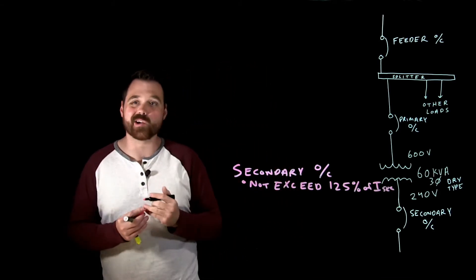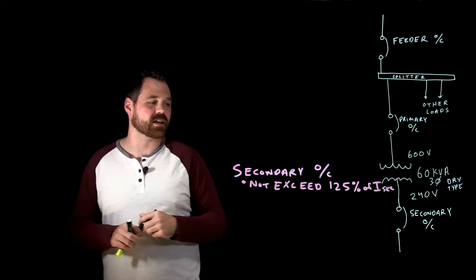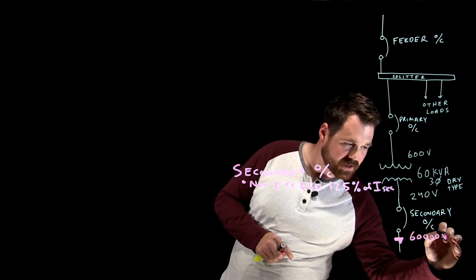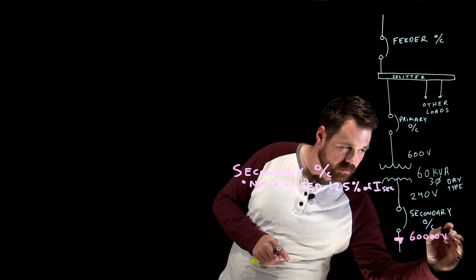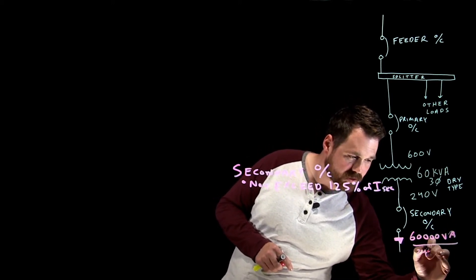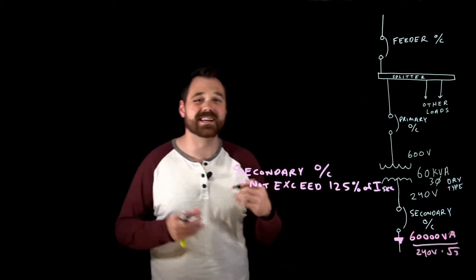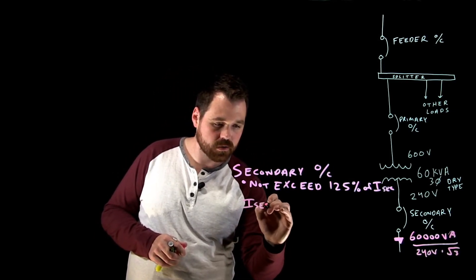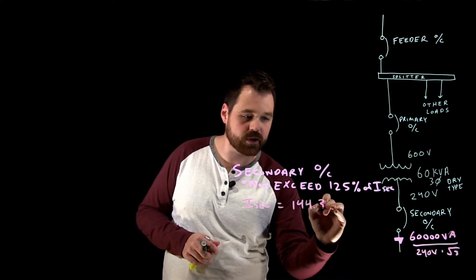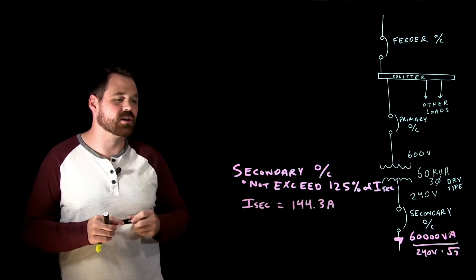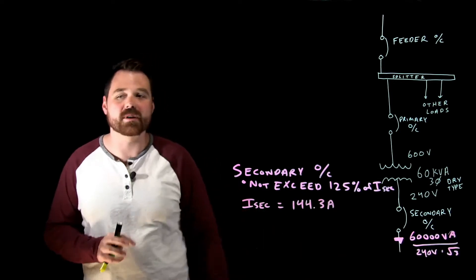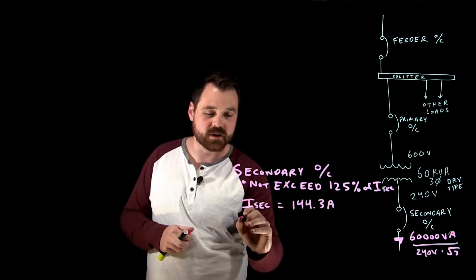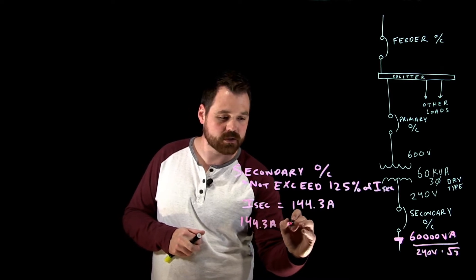In this case we're going to calculate our rated secondary current. I'm going to take my 60 kVA, 60,000 VA, divided by 240 volts times root three because it is a three-phase system. What I end up with is I secondary of 144.3 amps. Now I have up to 144.3 amps flowing on my secondary. My rule says that you can size that overcurrent device based on 125 percent so I'm going to go 144.3 amps times 125 percent which gives me 180.4 amps.